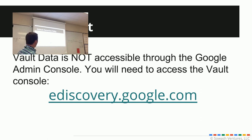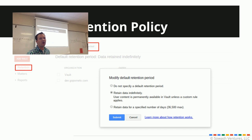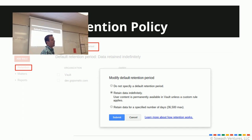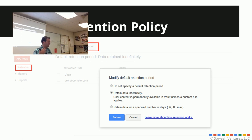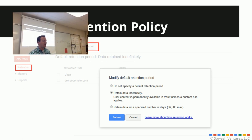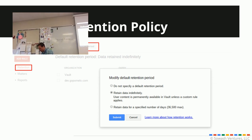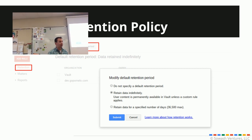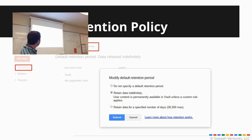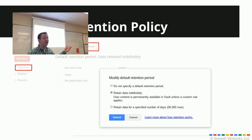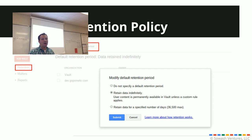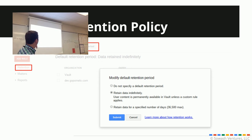Once you are in Vault, the first thing you will do is set up your retention policy for your organization — this is how you're dealing with the data in your domain. There are three options: no policy, which is the default if you haven't set it up; indefinite, where it just collects data until the end of time with no size limit; or retain data for a specified number of days.